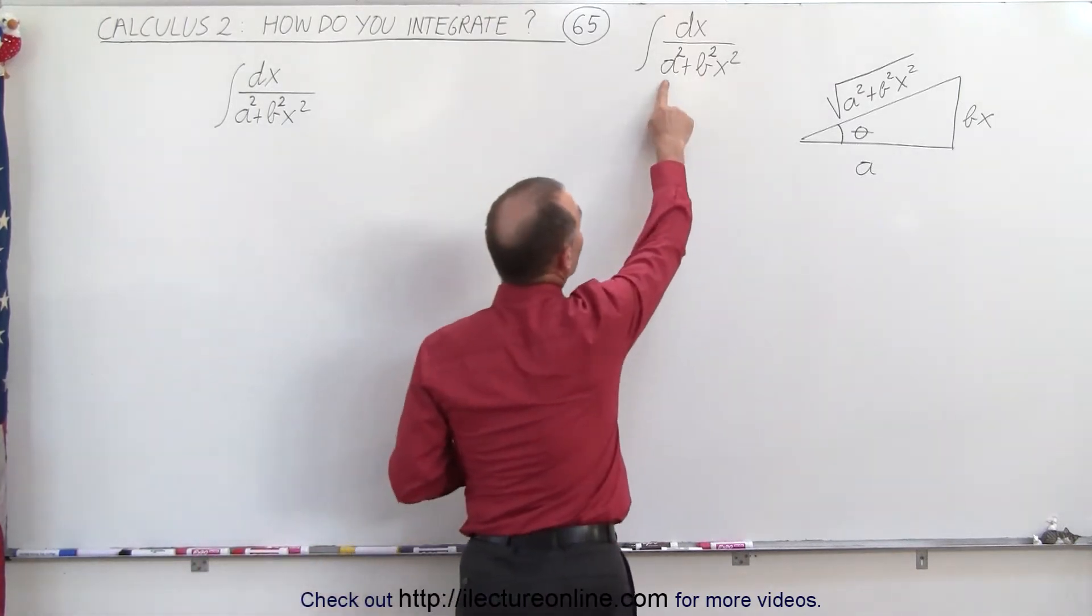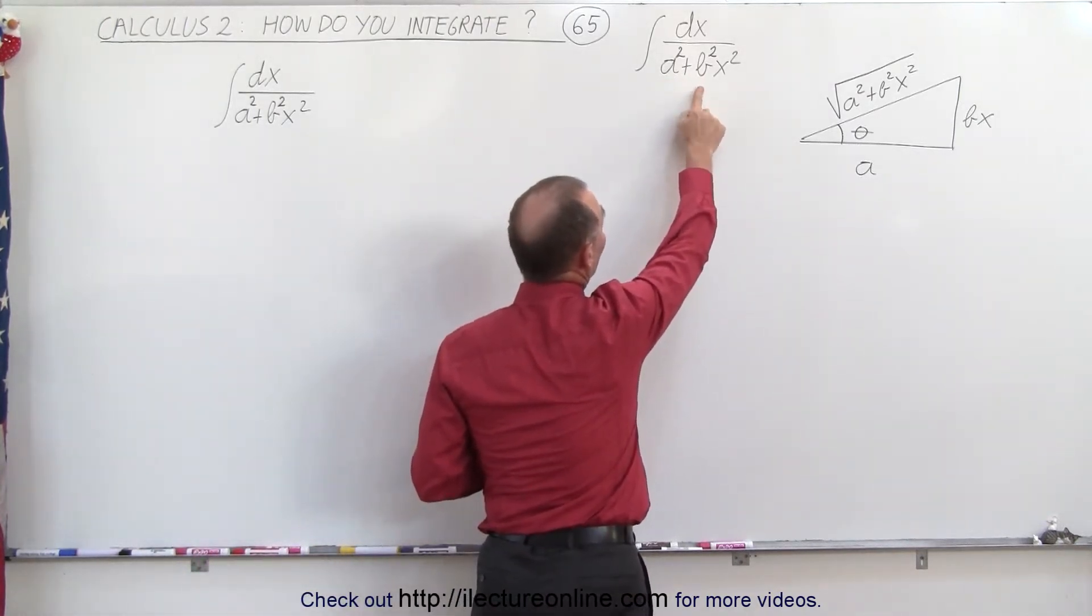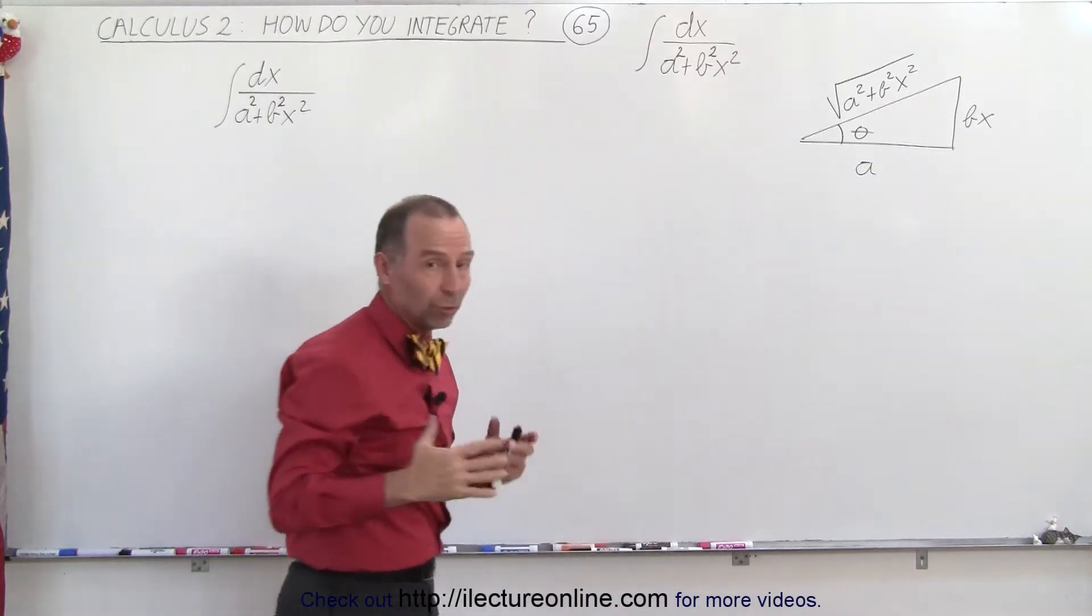Instead of an A, we have an A-square. Instead of a B, we have a B-square. And the methodology is going to be very similar.